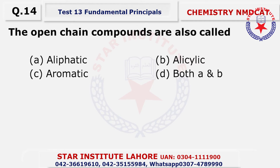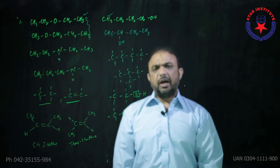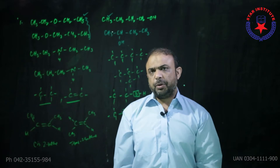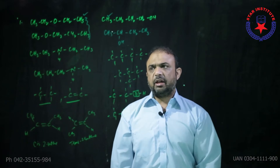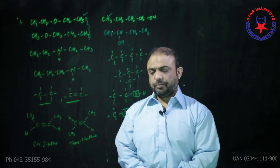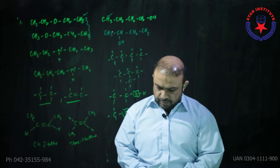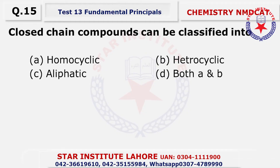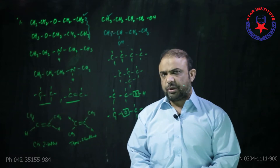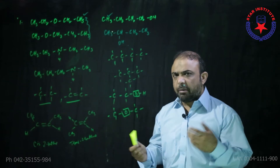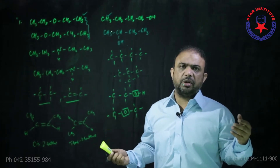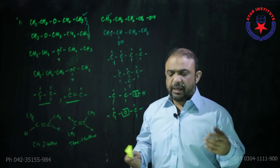Question number fourteen: Open chain compounds are also called as — their other name is aliphatic compounds. Open chains are called as aliphatic. Question number fifteen: Closed chain compounds are also called as — closed chain compounds can be in two categories: they can be homocyclic, or they can be heterocyclic. So the choice is D.